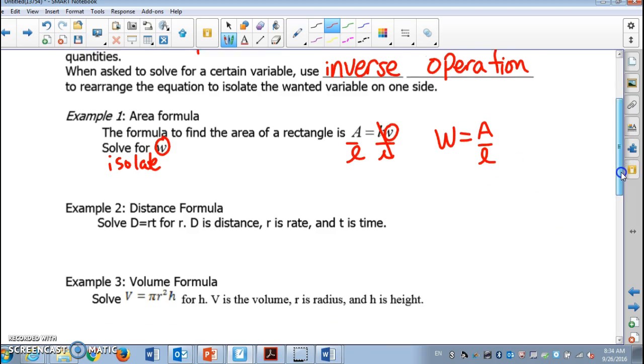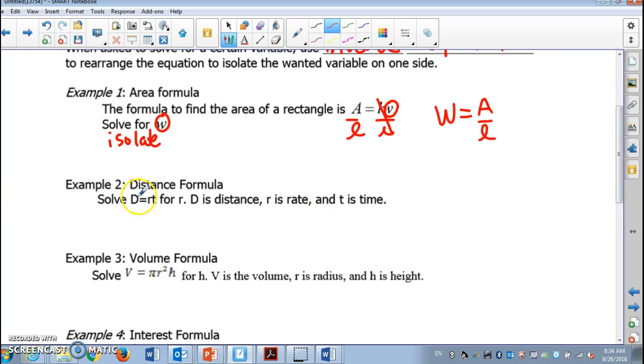Let's take a look at the next question. This time it's distance formula: D equals R times T. This time we're gonna solve for R. When they ask you to solve for R, that means you isolate R.